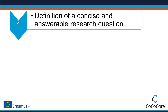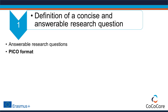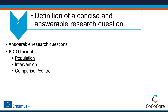The basis of any systematic review is one or several answerable research questions. In healthcare, research questions usually follow a specific structure called the PICO format. PICO is an acronym for population, intervention, comparison, and outcome — the elements a well-formed research question has to address.